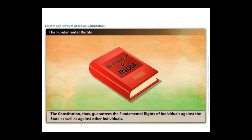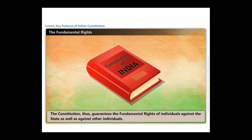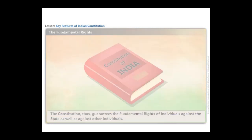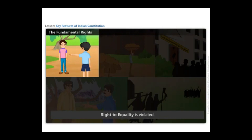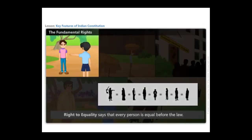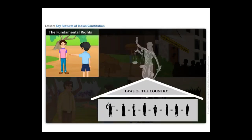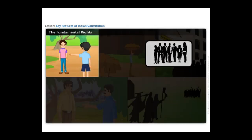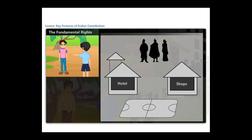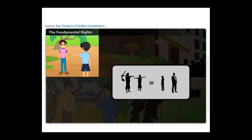The constitution thus guarantees the fundamental rights of individuals against the state as well as against other individuals. In the first instance, the right to equality is violated. Right to equality says that every person is equal before the law and shall be equally protected by the laws of the country. It also states that no citizen can be discriminated against on the basis of their religion, caste, or sex. Every person has access to all public places, including playgrounds, hotels, and shops. The state cannot discriminate against anyone in matters of employment.